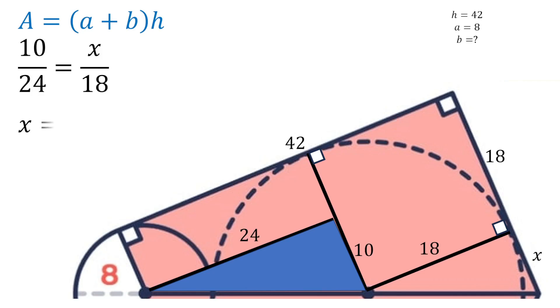Transposing and cross multiplying, we'll get that x will be equal to 10 times 18 divided by 24, which gives us 7.5. So the value of b will be 18 plus 7.5 which is 25.5.